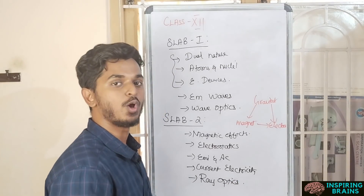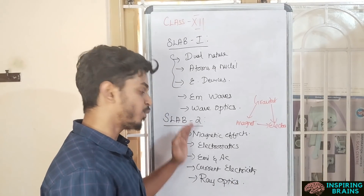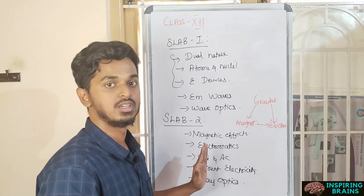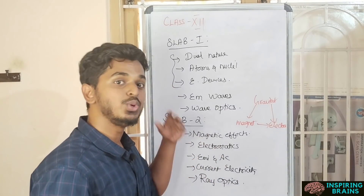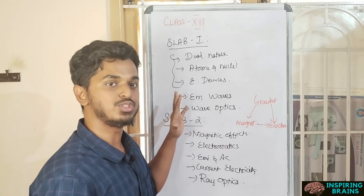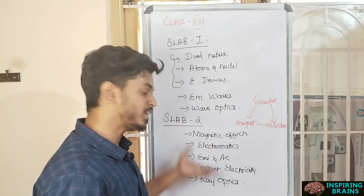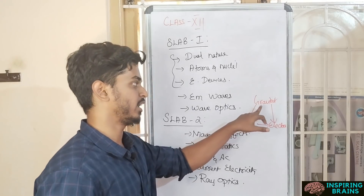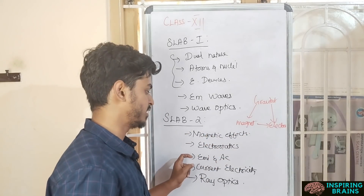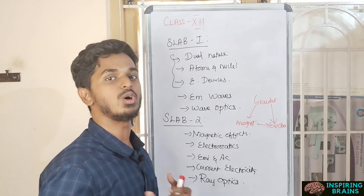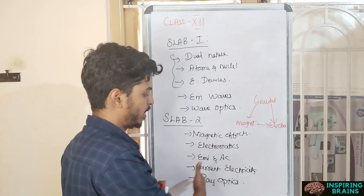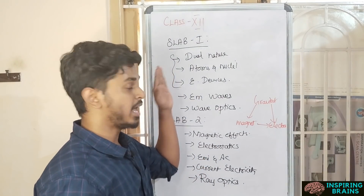If you follow this order, you can easily maximize your marks in Class 12 chapters. Even as a fresher, first concentrate on Class 12 — go with Slab 1 to get 5 to 10 questions, then apply the Gravitation–Magnetic Effects–Electrostatics concept, followed by EMI and AC. Once done, with confidence and formulas in mind, apply Current Electricity and finally Ray Optics.